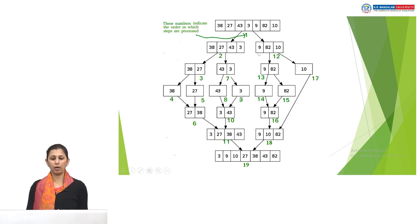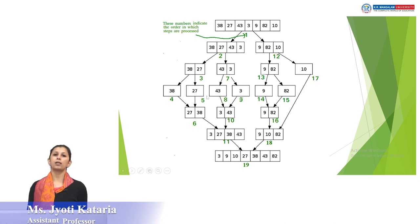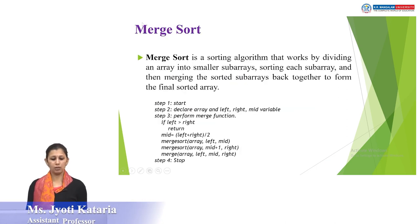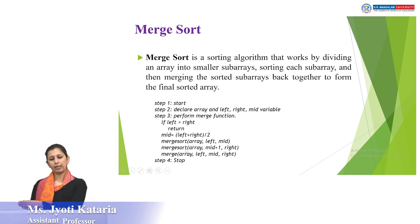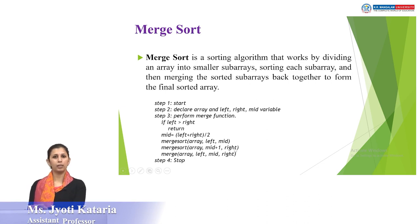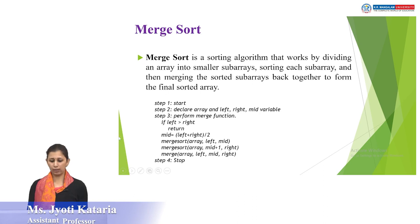To summarize merge sort: we divide the array into two halves, keep dividing until we have only one element on each side, then start the merging part. We declare array, left, right, and mid variables, and perform the merge function while left is less than right. We calculate mid = (left + right) / 2, do merge sort on the left side from left to mid, and on the right side from mid+1 to right, then merge both arrays.